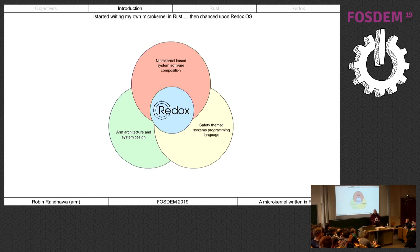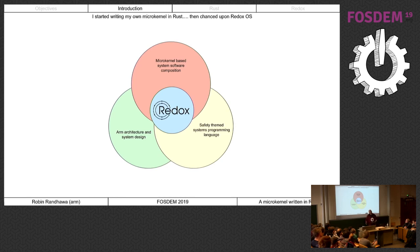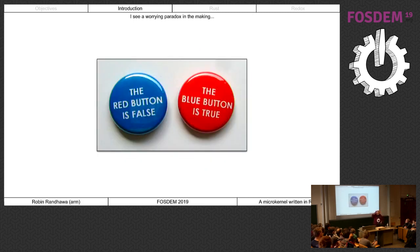I started writing my own microkernel - I'm a huge fan of the seL4 stuff and have been following it for a long time. But combining a new language with a new microkernel became daunting. So I asked: has anyone else tried to do a microkernel in Rust? It turns out someone had - Redox. I said I'll use that as a scratching-an-itch exercise.